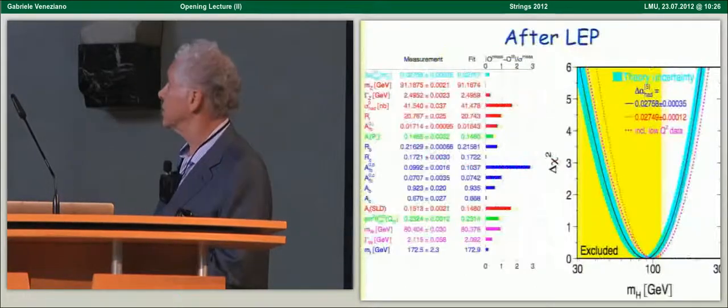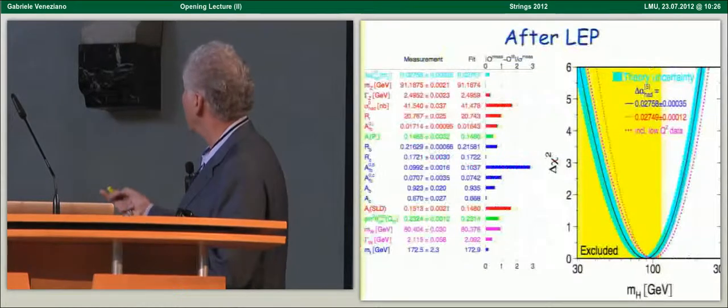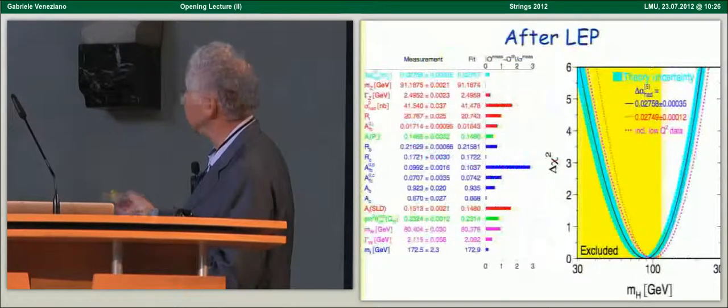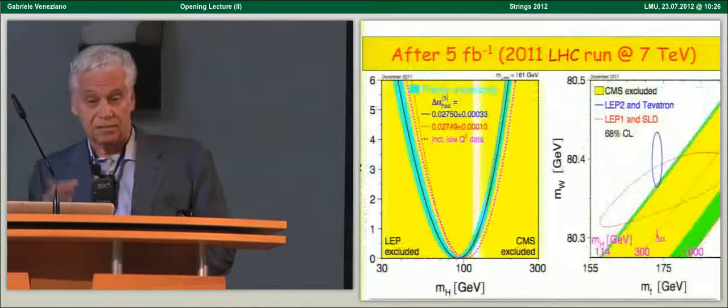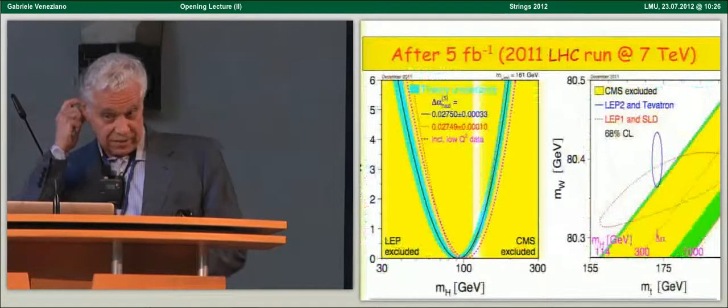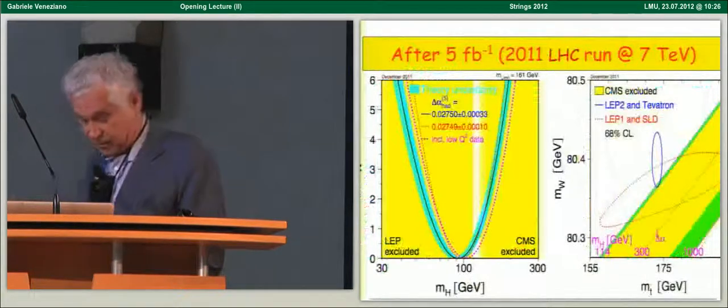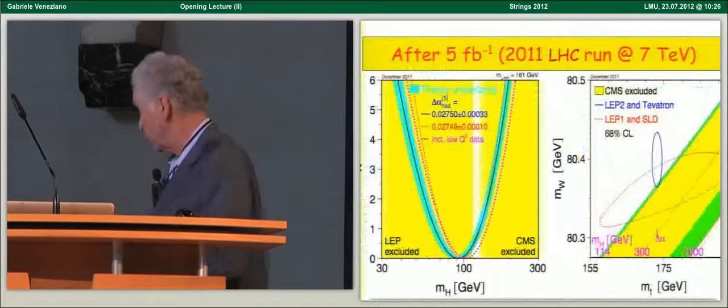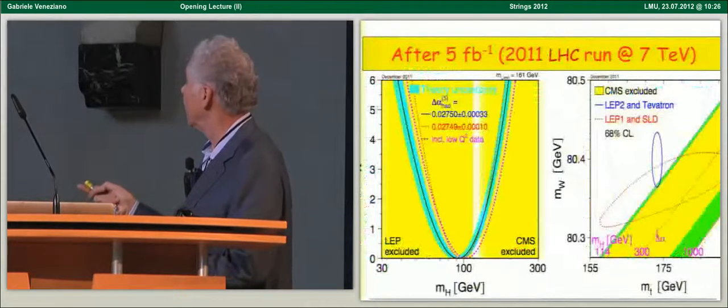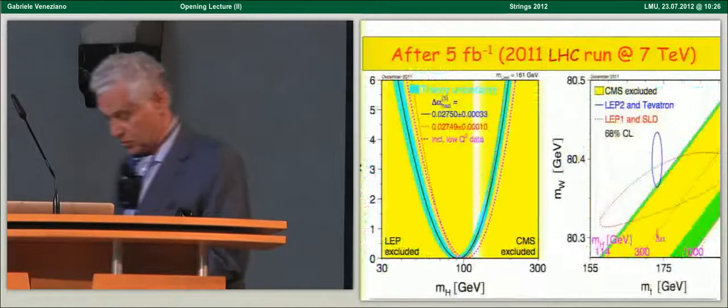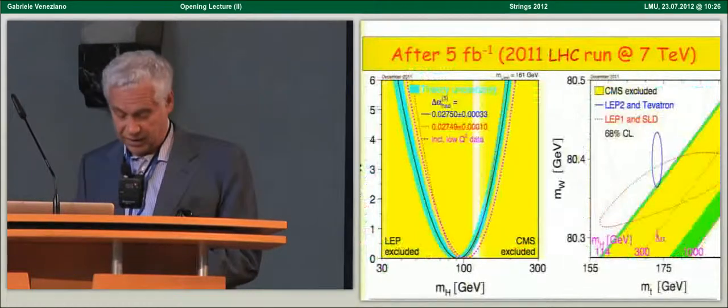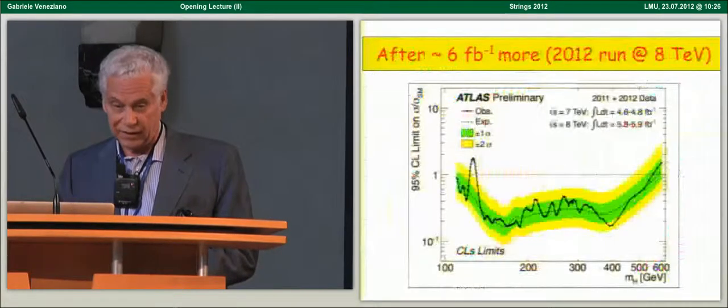And so I just flash very rapidly to remind you that it is really taking into account these radiative corrections that gave the first indications in favor of a light Higgs, because the precision tests at LEP pointed to have a good fit to a light Higgs. The first run, 2011, at LHC, excluded already, limited the possibilities to this very small window.